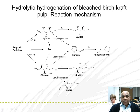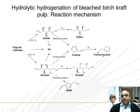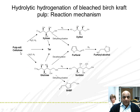Dehydration and cyclization forms furfural, and furfural further goes to form furfuryl alcohol. It also forms xylitol. Furthermore, this pulp cellulose is transformed to glucose.